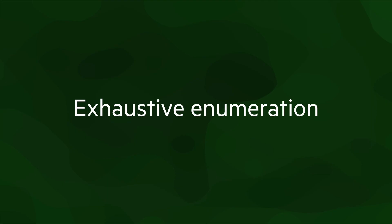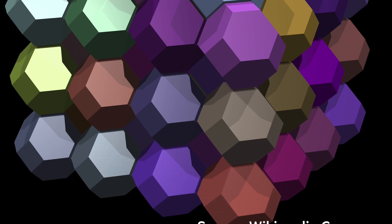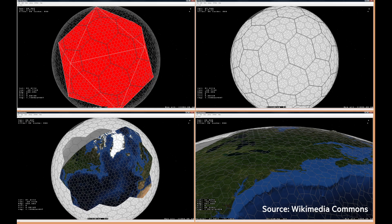Taking a step back, voxels are only the most common data model among a family of representations called exhaustive enumeration models. Whereas most other data models spend a great deal of space describing the shape of every individual object, exhaustive enumeration models take a very different approach, instead forcing all objects to fit within a predefined subdivision of space. These can include other kinds of grids in 2D and 3D space, which are usually called honeycombs, as well as more specific subdivisions for a particular application.